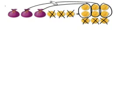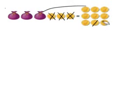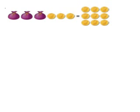Let's go ahead and check and see if we're right. I'm literally going to put two coins in each bag. So I have two, four, six, seven, eight, nine coins on this side, and one, two, three, four, five, six, seven, eight, nine coins on this side. So my answer is right.